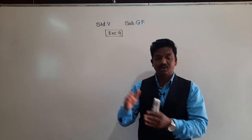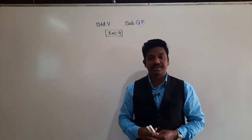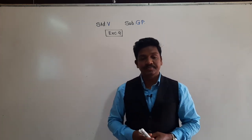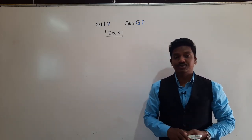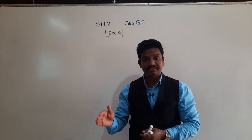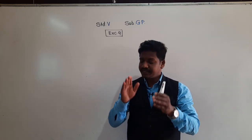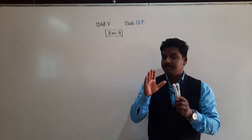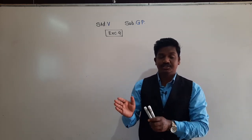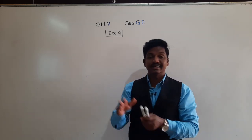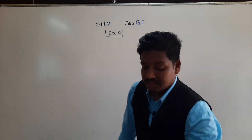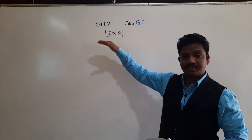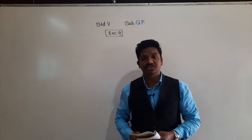We learned addition and subtraction when denominators are the same and when denominators are not the same. We also learned addition and subtraction of mixed fractions. Similarly, the next two operations we are going to learn today are multiplication and division. Pay attention carefully — it is very easy to multiply and divide fractions. We will solve examples from Exercise 9 to understand these two concepts.